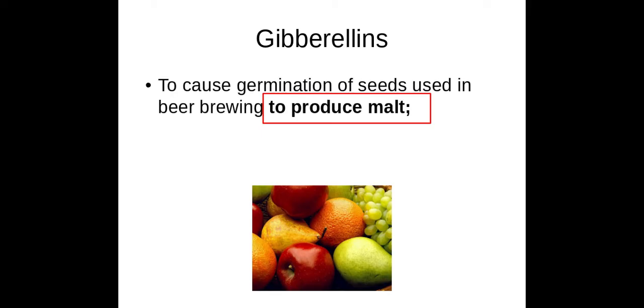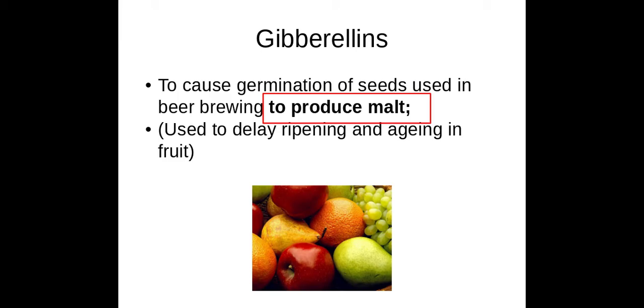Gibberellins are used to produce malts, which can be used in the beer-making process. They can also be used to delay ripening, but the main application here is to produce malt.